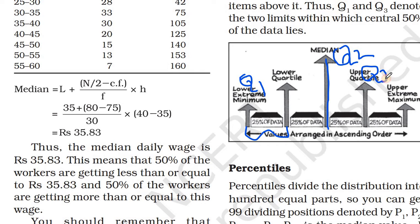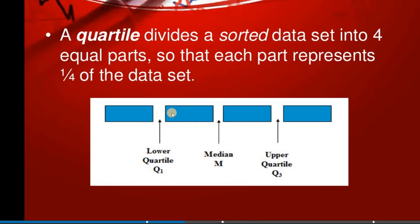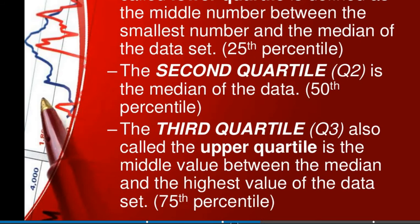So, the lower quartile is Q1, the median is Q2 (the middle value), and the upper quartile is Q3. A quartile divides sorted data into four equal parts. Q1 is the first 25 percentage, Q2 is the 50 percentage (that one is the median), and Q3 is 75 percentage.